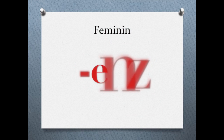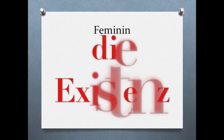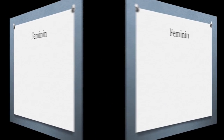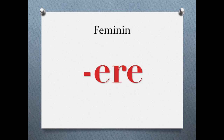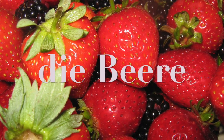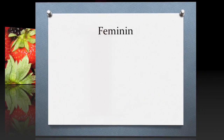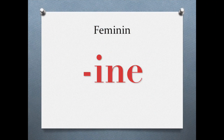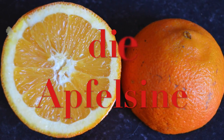The -ENZ ending can be found, for example, in 'die Existenz'. The -ERE or -RE ending: here are examples — 'die Beere', 'Himbeere', 'Erdbeere' — any 'Beere'. And an example for -INE (I-N-E) would be 'die Apfelsine'.